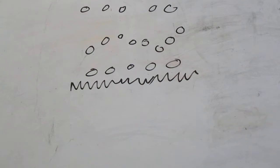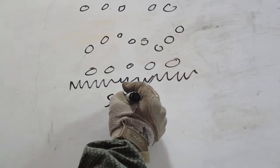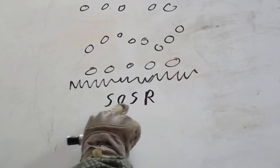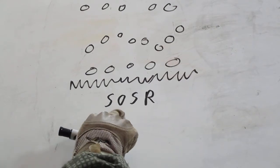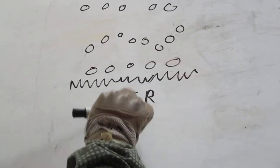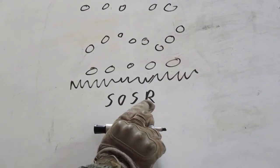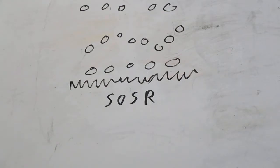Now with any breach operation you need to make sure you establish SOSR: Suppress enemy fires with your own direct and indirect fires, obscure the area with smoke or some other form of obscuration, secure the area in front of and behind the obstacle meaning take out the enemy positions, and then you call in for the engineers to reduce the breach of the obstacle.